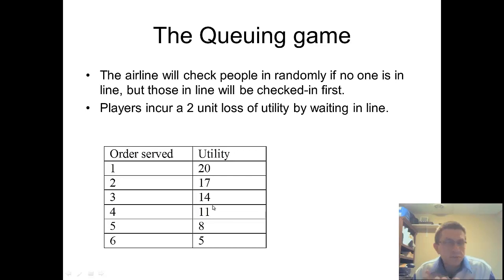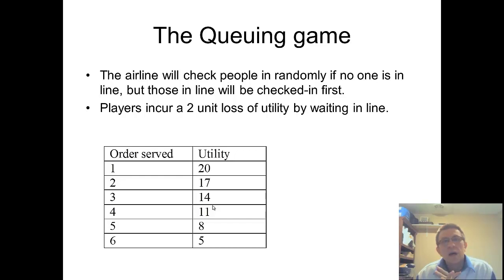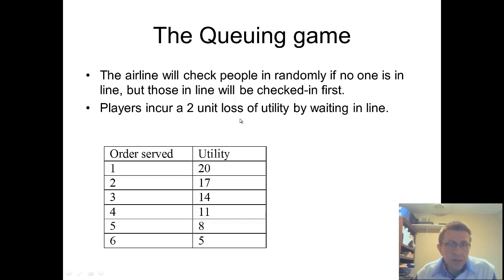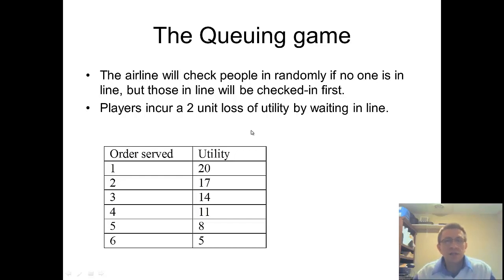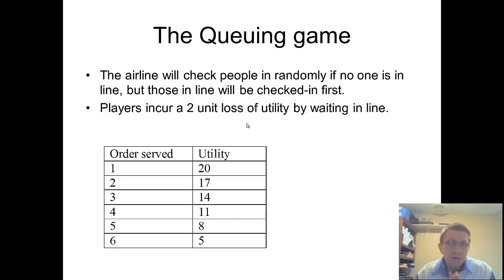We set up this game somewhat realistically. The airline will check people in randomly if no one's in line — if nobody's waiting, they just call out names randomly, so there's a random chance you get checked in first. But players incur a two-unit loss of utility by waiting in line. Waiting in line guarantees you are served next, but at a cost of two units of utility. The question is: with six people, what is the equilibrium number of people who should be waiting in line?